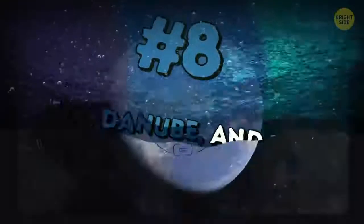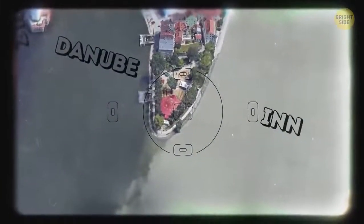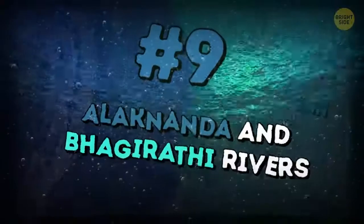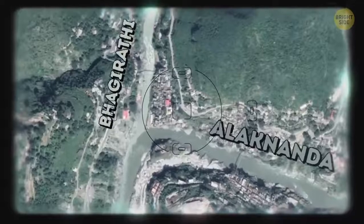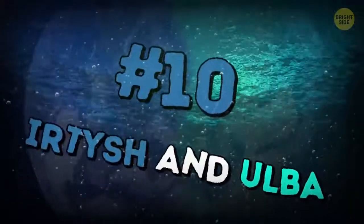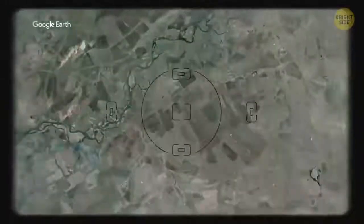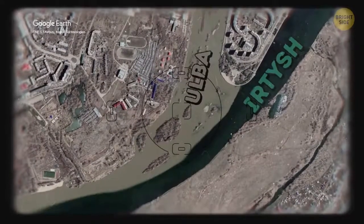8. Ilse, Danube, and Inn. The junction of these three rivers is in Passau, Germany. Ilse is a small mountain river to the left, the Danube is in the middle, and Inn is the light river to the right. Inn is wider than the Danube here but still is its Aflux. 9. Alaknanda and Bhagirathi rivers meet in India. Alaknanda is dark and Bhagirathi is light. 10. Irtysh and Ulba flow into each other in Kazakhstan, near the city whose name you'll never be able to pronounce. Nor will I. You give it a shot. The Irtysh has clean water and Ulba cloudy.